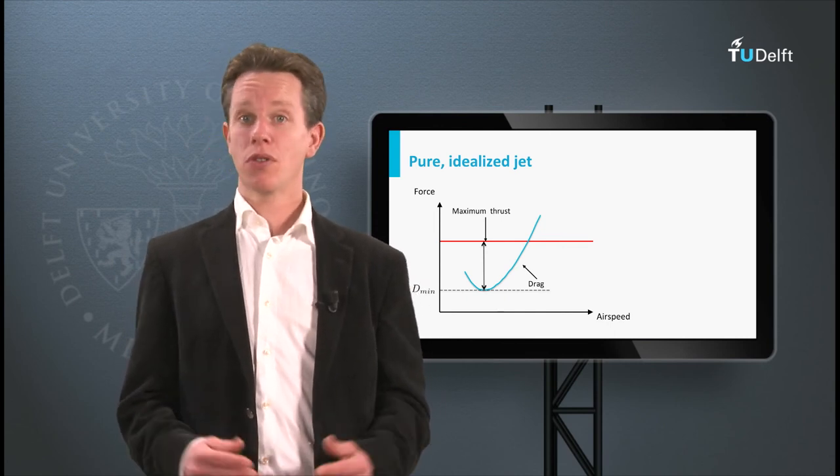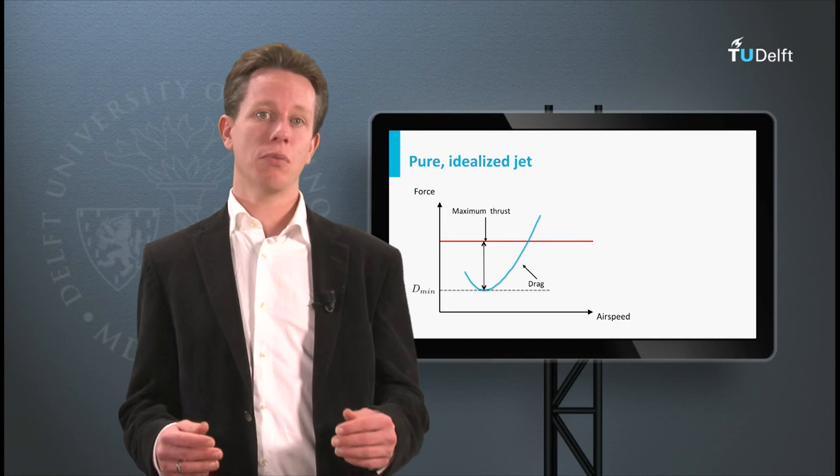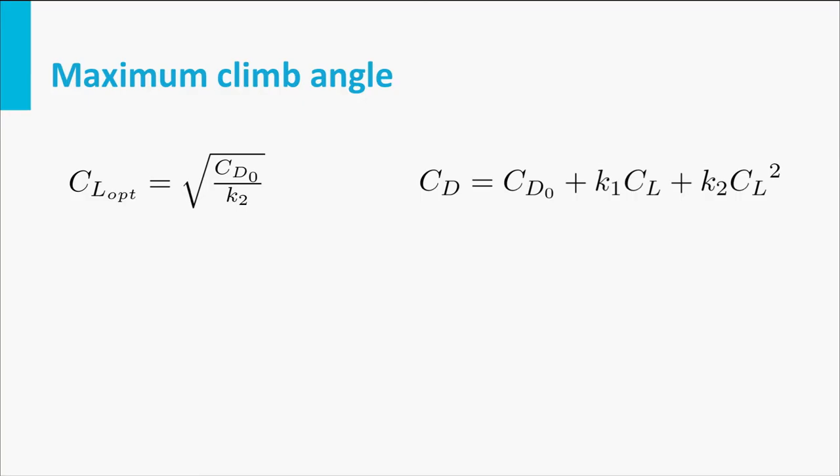The lift coefficient for this situation can be calculated from the lift drag polar. If the lift drag polar is known, CL can be determined and consequently the airspeed can be determined at which the maximum climb angle can be achieved. This is done by inserting the optimal CL, which we already calculated in previous items, into the airspeed equation.